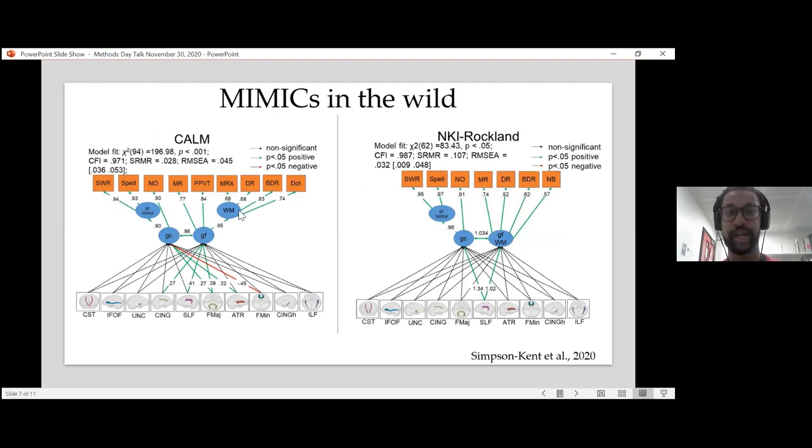In actual data, in my first PhD project, we looked at in the Cam sample, which is a really rich data set here at the CBU, and we also looked at NKI Rockland in the States. And basically you're looking at these models. So we have these 10 white matter tracks for each sample, and we're seeing how those - crystallized intelligence or GC and fluid intelligence GF - how do they relate to each other. And you estimate the covariance between them and you also estimate how they would load onto various cognitive tasks or even other latent variables.